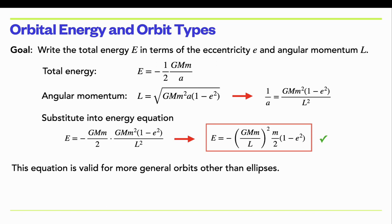So let's solve for 1/a, since we have a 1/a term. You just divide through by everything and then square each side, giving GM m² (1 − e²) over L². You can substitute this value in for 1/a. That's just solving and plugging it in, then simplifying. You can group together the G's — you'll have G², M², m² times an extra m, over L² — then times m/2 times (1 − e²). It turns out that even though we derived this equation assuming an elliptical orbit, this result is more general and actually works for any kind of conic section orbit.